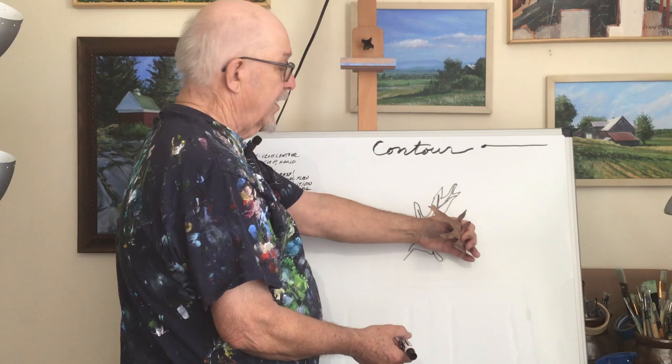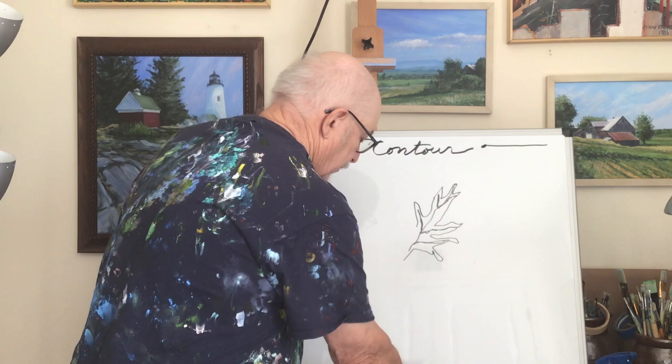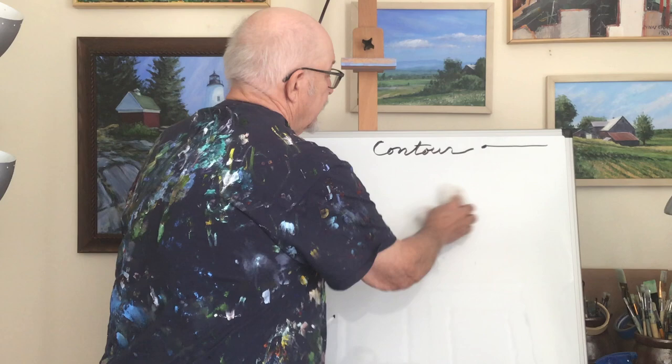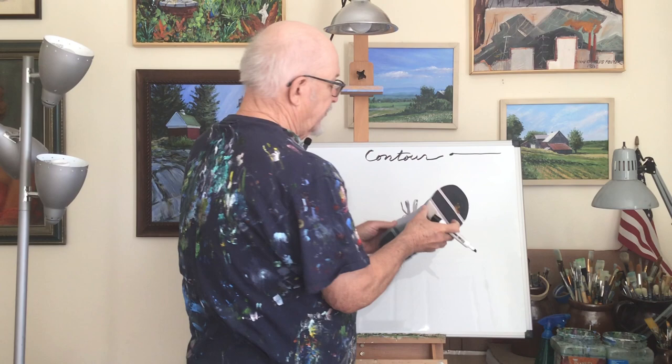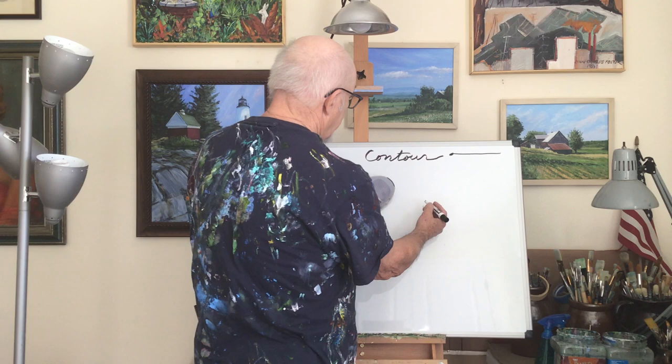Other objects that work really well for contour drawing: I like to have students draw their shoes. I always made students take their shoes off, which some of them felt was a bit strange — even the adults I've taught. But you usually know your shoe pretty well, so it's a nice thing to work with. You can put it out here on the edge and start.